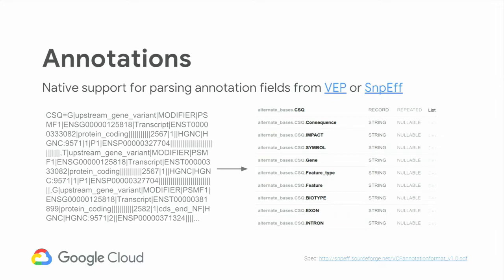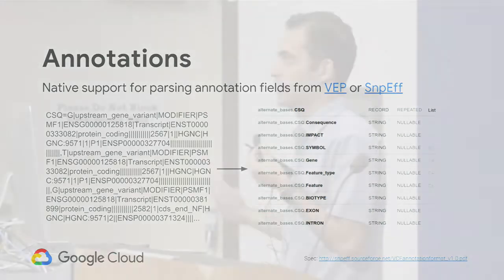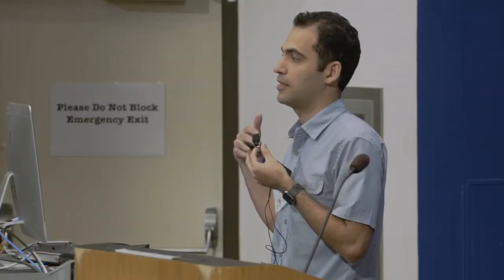And then lastly, we recently added annotation support. So if you run other open source tools like VEP or SNPF, you can pre-annotate the VCF files and then we parse the annotations and load them into properly structured columns so that you can do queries like give me all the high-impact variants in genes associated with breast cancer or something like that.